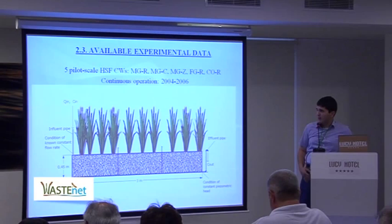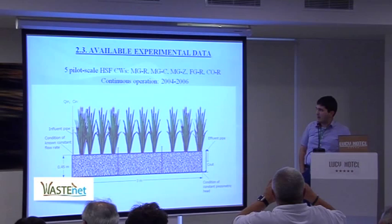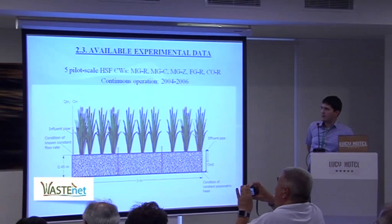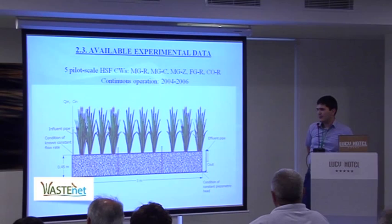There were three different types of porous materials: medium gravel (MG), fine gravel (FG), and cobbles (CO). There were two types of plants: reeds (R) and cattails (C) — giving tank name MGC. One tank, labeled Z, was unplanted. We simulated the operation of all five tanks.